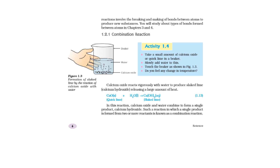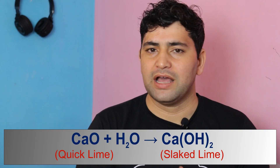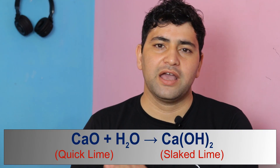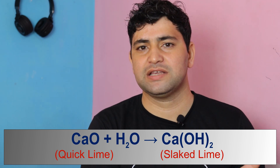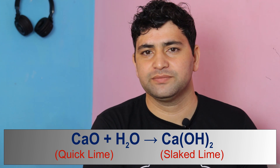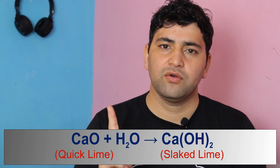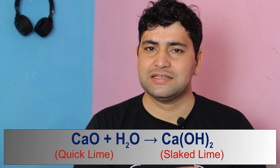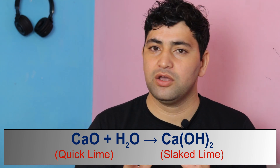Let us take another example from NCERT book page six: the reaction of quicklime, that is calcium oxide, with water. When calcium oxide reacts with water, it forms calcium hydroxide, which is also known as slaked lime. Here calcium oxide and water are combining with each other to form a single product, so this is also an example of combination reaction.